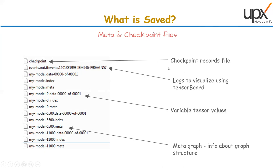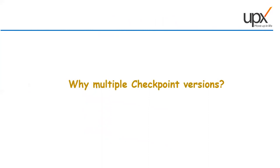You can also use logs to visualize using TensorBoard — the `tf.events` files we covered in our TensorBoard discussion. All variable tensor values are saved in `model.data` files, while `.meta` contains info about the graph structure: how many layers, how many neurons per layer, how neurons are interconnected across layers. We keep multiple checkpoint versions because we don't know when the system might misbehave.